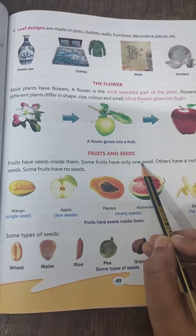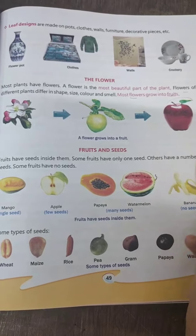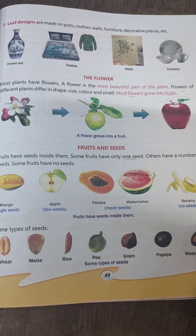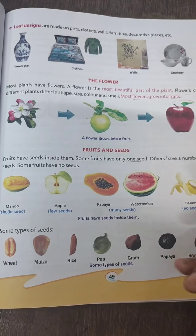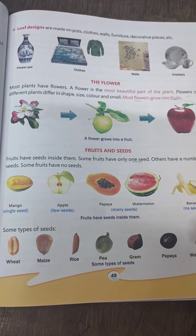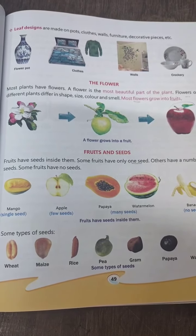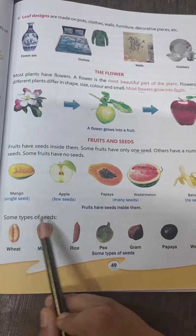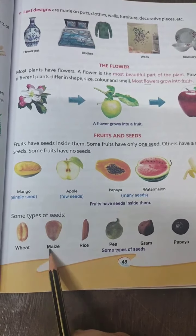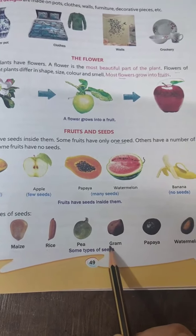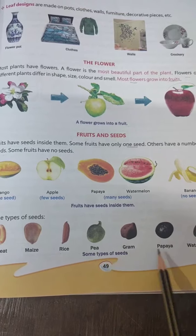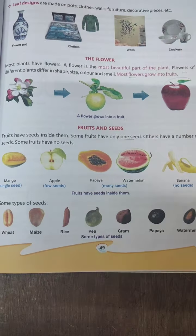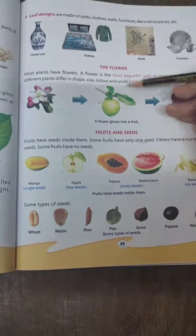Some fruits have only one seed, like mango. Others have many seeds, like apple, papaya, and watermelon. Some common types of seeds found in fruits include wheat, rice, peas, gram, papaya, and watermelon seeds.